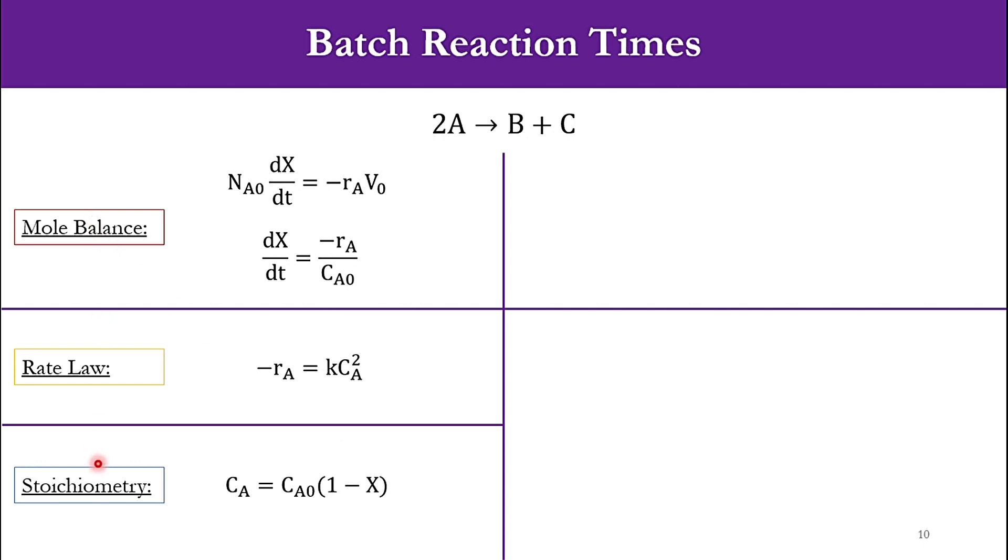How we can combine it? By putting the value of CA over here. So accordingly, -RA equals kCA0²(1-X)². Then substituting the -RA value, it will be dX/dt equals kCA0²(1-X)² in place of -RA over CA0. Now this CA0 will be cancelled out with that CA0.